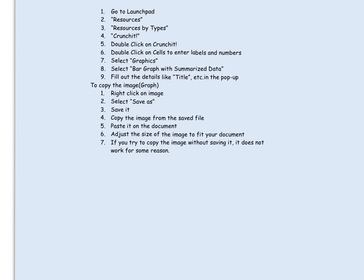The bar graph was constructed using CrunchIt, available on LaunchPad. Go to resources, then resources by type, double-click on CrunchIt, double-click on the cells to enter labels and numbers, go to graphics, and select summarized data. These are also the instructions on how to copy and save the image so you can paste it into any document you need.